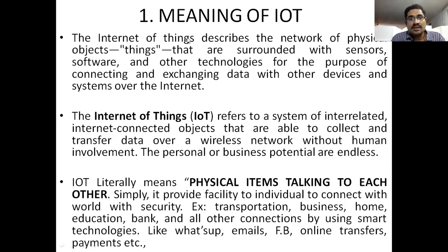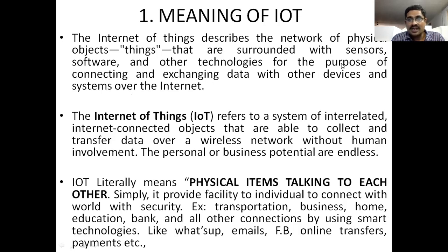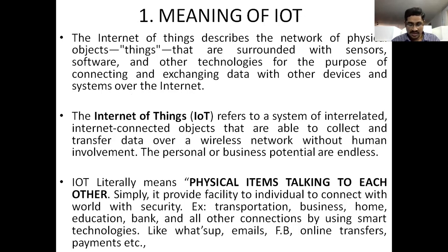The Internet of Things describes the network of physical objects or things that are surrounded with sensors and software, and other technologies for the purpose of connecting and exchanging data with other devices and systems over the internet. By using internet, data exchanging and connecting other devices — that is the point here: Internet of Things, smart technologies.